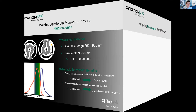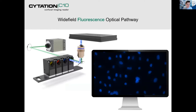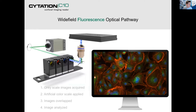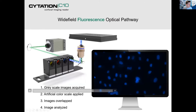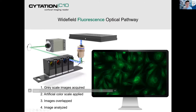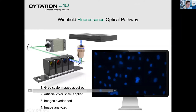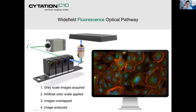For wide field fluorescence, the optical pathway works as follows: excitation light comes from one of the cubes, moves through the objective, hits the sample, and the emission light is read by the camera — quite conventional. The images are overlapped and can be analyzed in the one platform.